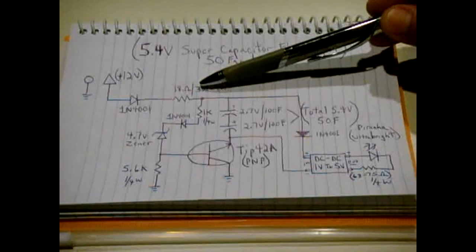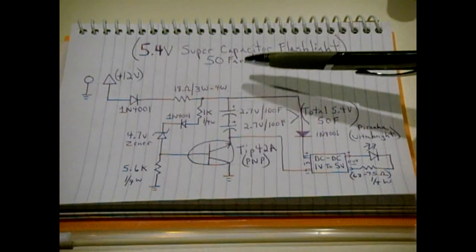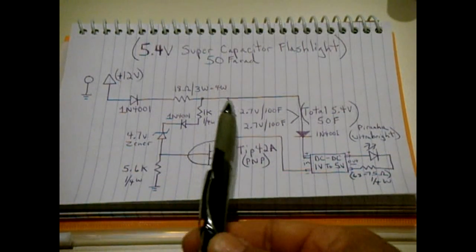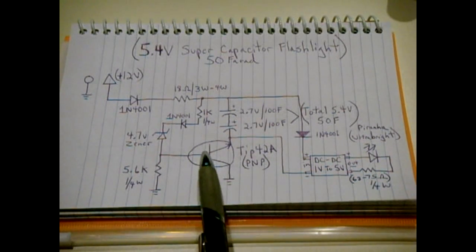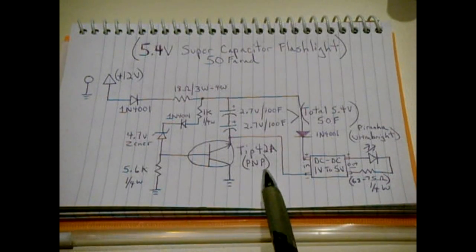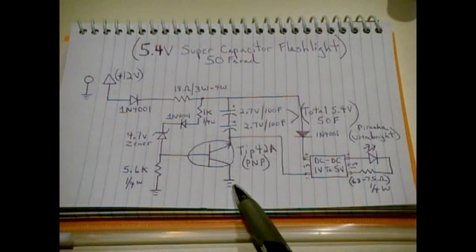So you have the 18 ohm resistor, which limits the current flowing through, and then it goes into the capacitors, into the emitter of a PNP, in this case it's a TIP-42A, and then the collector goes to ground.